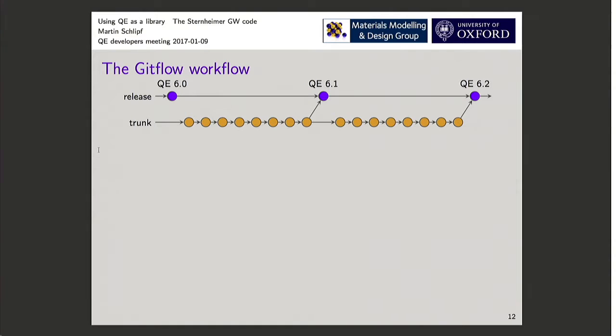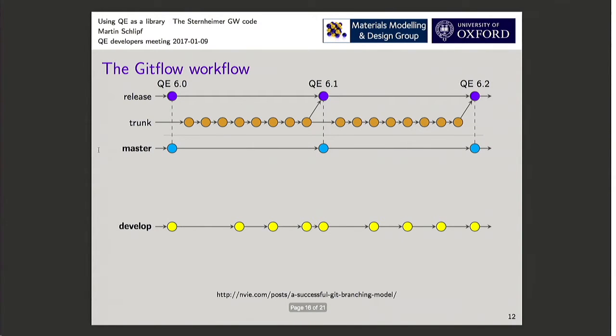This is more or less the workflow Quantum Espresso uses. You have this trunk with frequent commits. And then at some point, a release version is forked out of that, which is put to the website. This is mirrored in my own SGW. You have a master branch that always will have a commit when there's also a Quantum Espresso release. So they are in sync all the time. And there's a development version which is updated frequently.